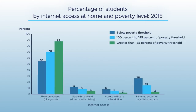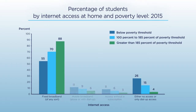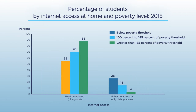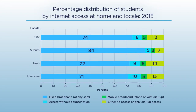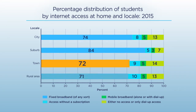The percentage of students with different types of internet access or no internet access at home varied by poverty status. Students below the poverty threshold had lower levels of access to fixed broadband than students above the poverty threshold. Fixed broadband access was highest for students in suburban areas, followed by students in cities. Students in towns and rural areas had lower levels of broadband access.